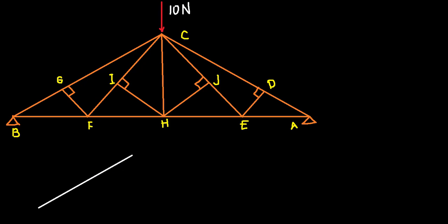We have a single joint with a force going from one direction towards it — a compressive internal force. In order to maintain static equilibrium, we need a similar yet opposite force from the other direction going towards it, of the same value but opposite direction.